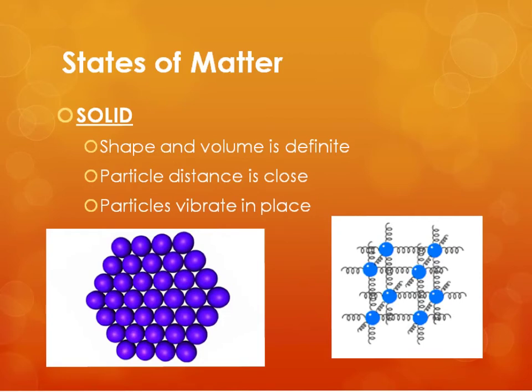We'll start with the three that you're most familiar with and just talk about a few of the properties that we can use to describe them. This is another way that we can classify matter — basically in terms of how the particles are arranged. For solids, solids have a definite shape and volume, so that means it's going to hold its own shape and it has a volume that you can measure that is always going to stay the same for that object.